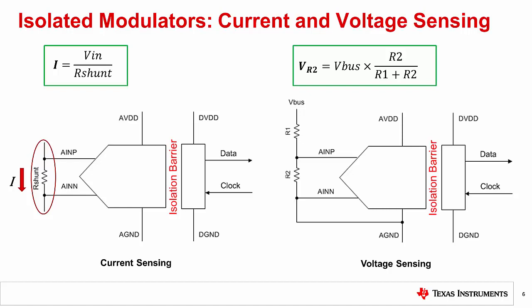While current sensing is the most common application for isolated modulators, they can also be used for voltage sensing. To learn how to optimize the input of an isolated modulator for voltage sensing, please check the TI design library. For additional isolated modulator resources, please visit ti.com/isolation and click on the isolated ADCs link.